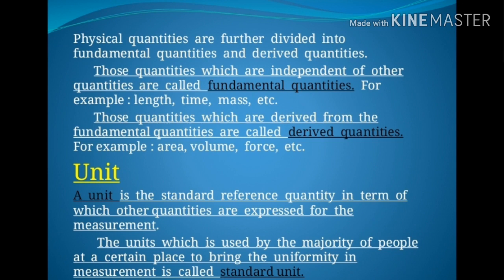And length does not depend upon time. Whereas those quantities which are derived from fundamental quantities — meaning these quantities are dependent on fundamental quantities — are called derived quantities. For example, area. The general formula of area is length into breadth. Length is measured in meter and breadth is also measured in meter, so area depends upon two fundamental quantities. That is why area is a derived quantity.